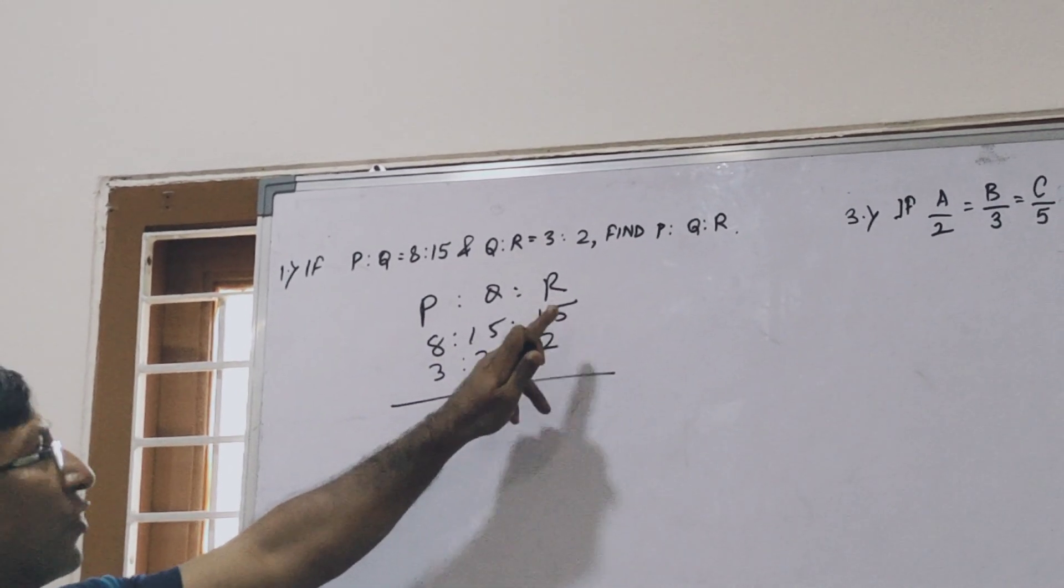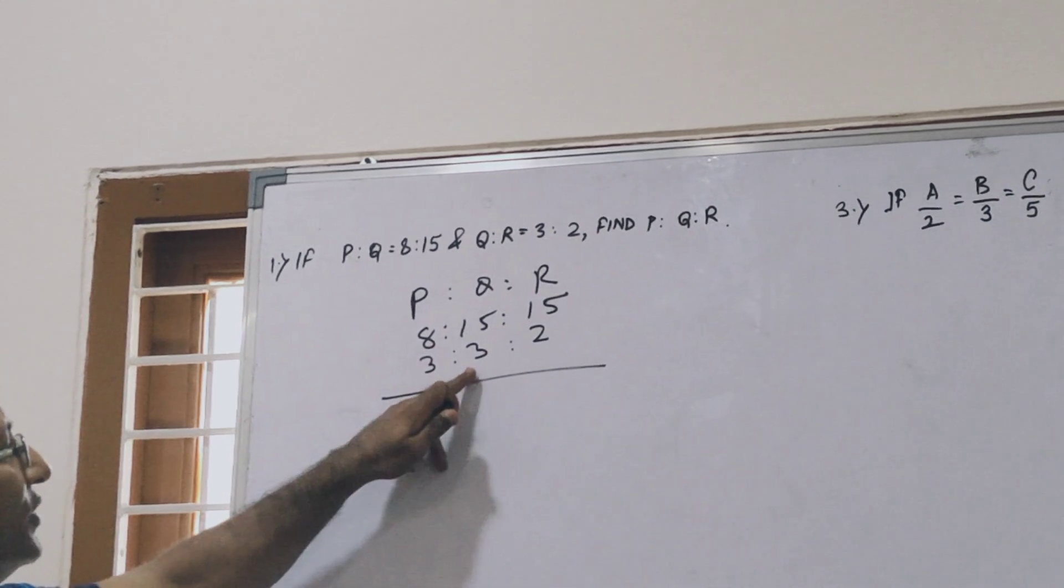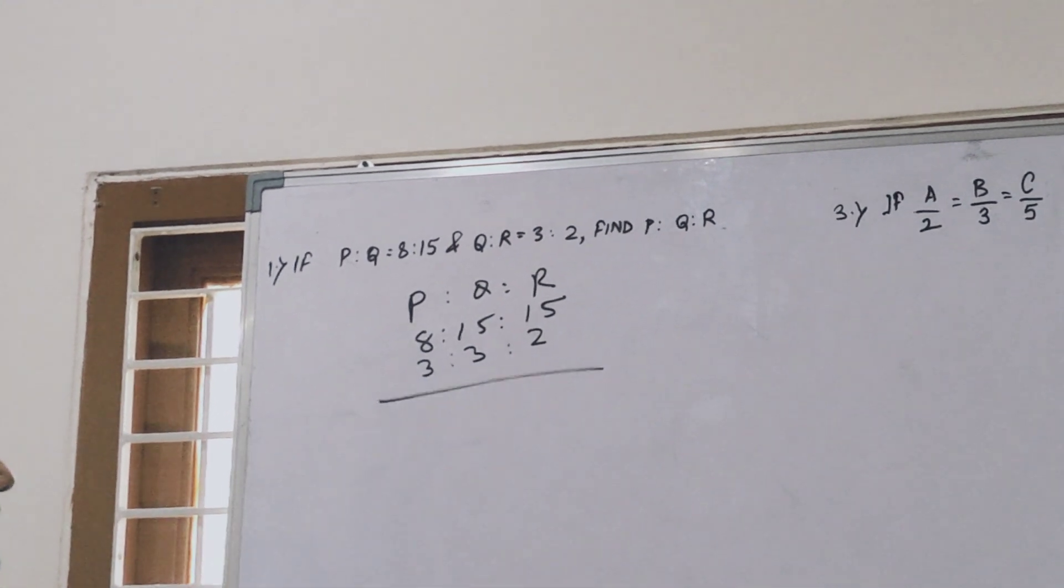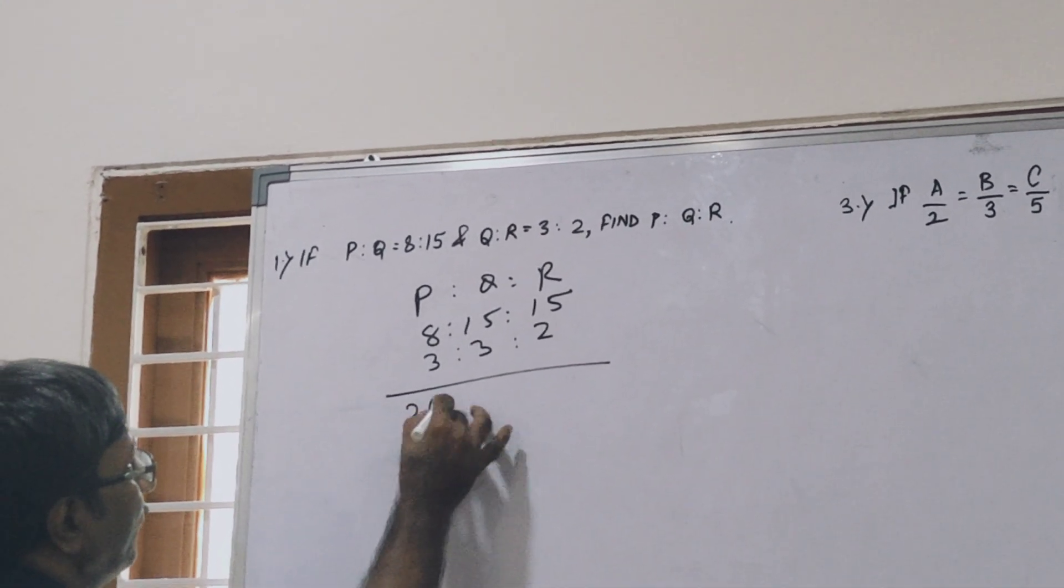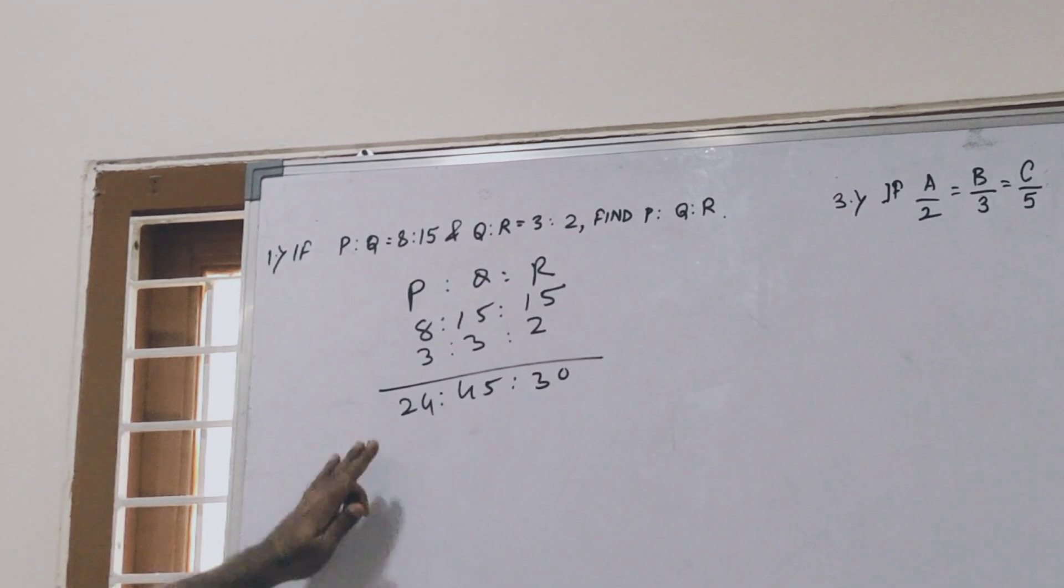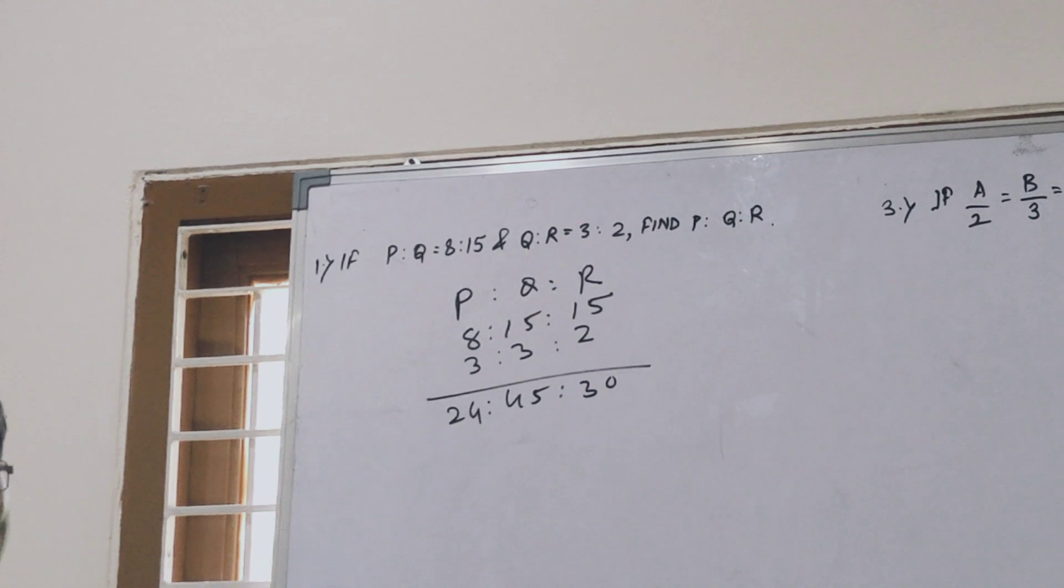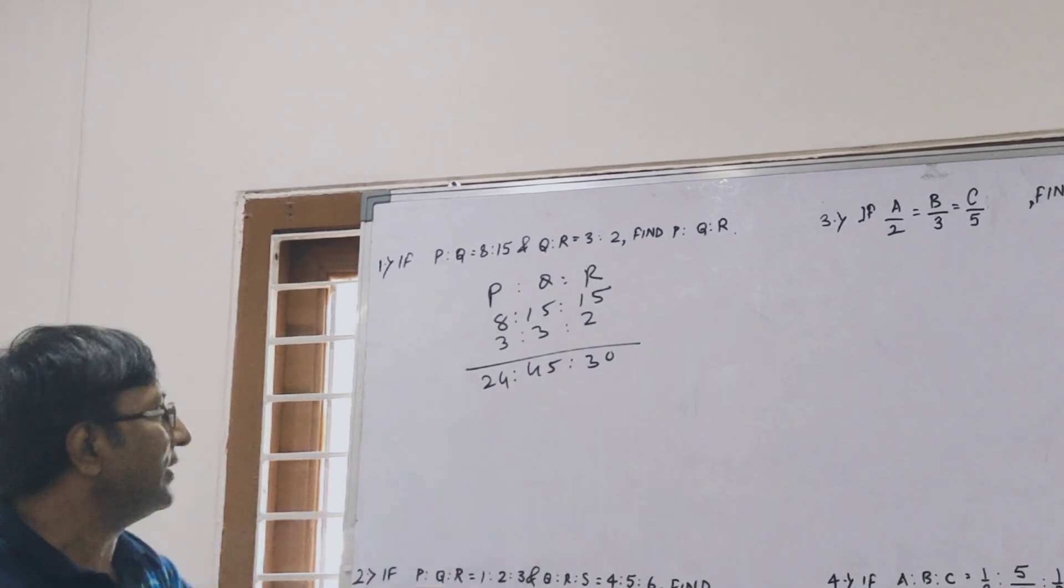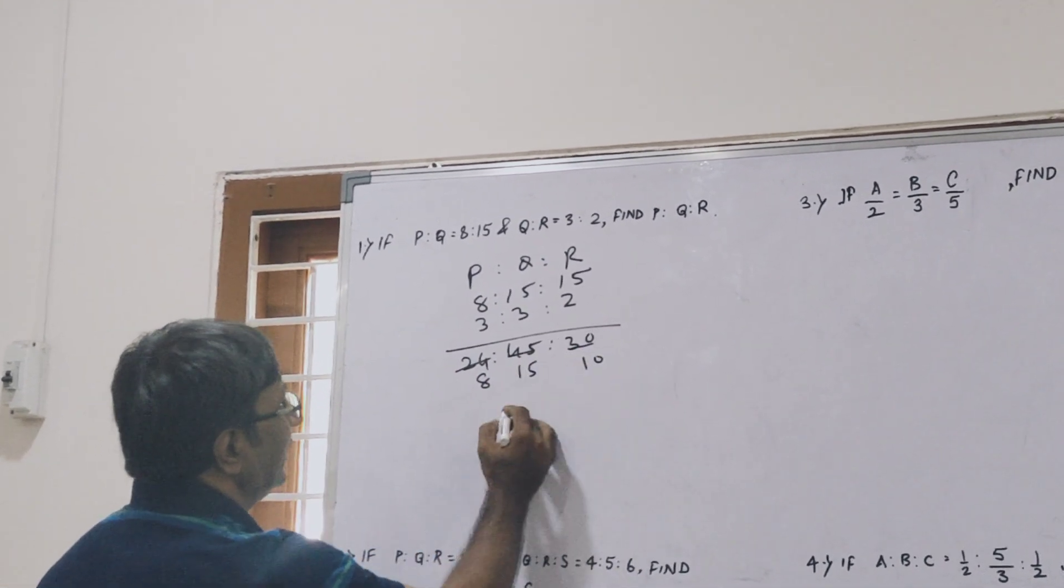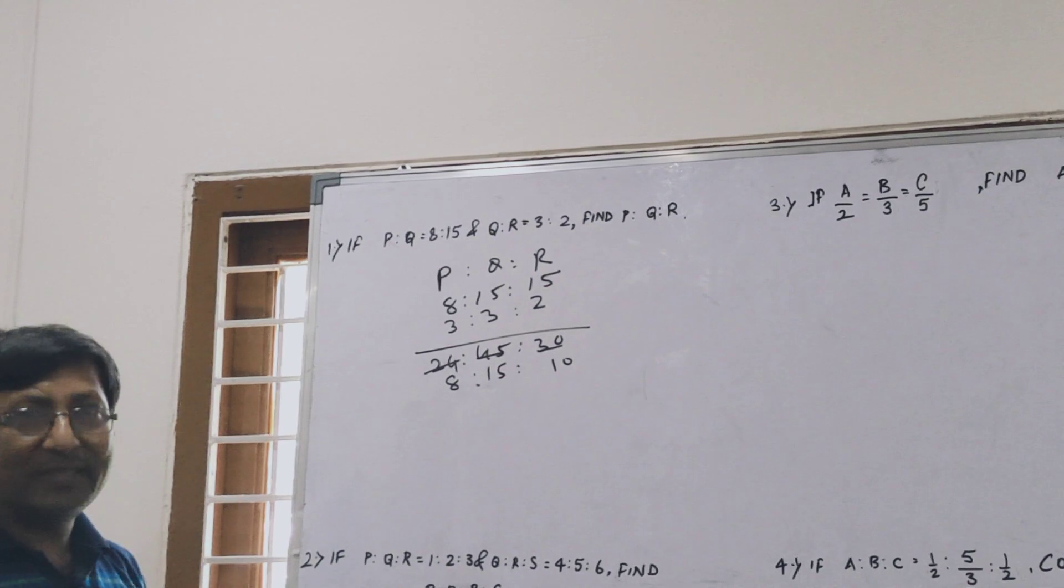First point is P ratio Q is 8 to 15, so write 8 and 15. This R is vacant, so write the number near to R, that is 15. Q ratio R is 3 and 2. Now multiply. Here 3 times 8 is 24, 3 times 15 is 45, and 15 times 2 is 30. So 24, 45, and 30. But if there is any common factor then divide. Here 3 is a common factor, so the correct answer is 8 ratio 15 ratio 10.